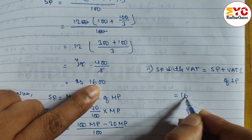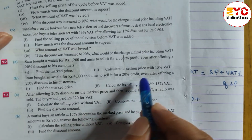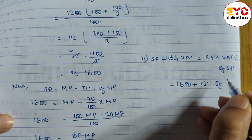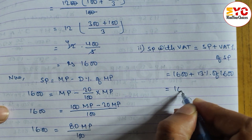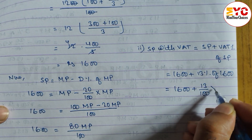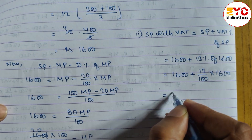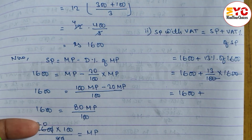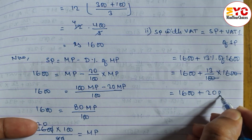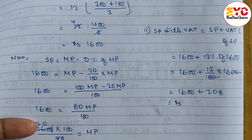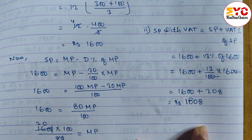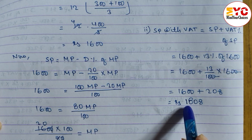SP value is 1600. Plus VAT percent — government VAT is 13%. So we write: 1600 + (13/100) × 1600. Cancelling zeros: 13 × 16 = 208. Adding: 1600 + 208 = 1808 rupees. So the selling price with VAT, or final price we have to pay, is Rs.1808.